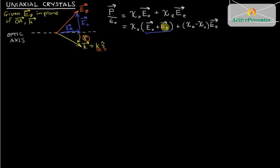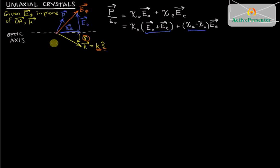As long as chi_E and chi_O are different — which is what defines birefringence — there will be an extra component in the direction of E_E, making the polarization vector not parallel to the electric field. So the electric field is applied in a certain direction, and the electron clouds polarize not quite in a parallel oscillation. That's the physically interesting thing about birefringence: the shaking of electron clouds is not in the direction of the applied field.